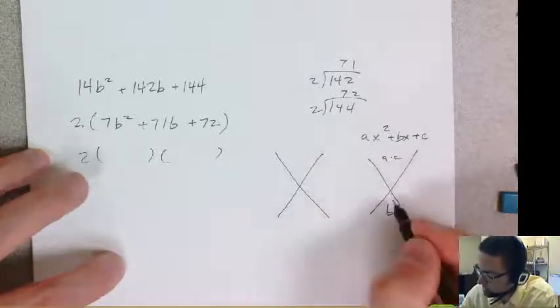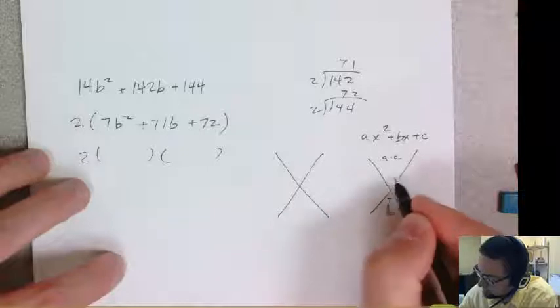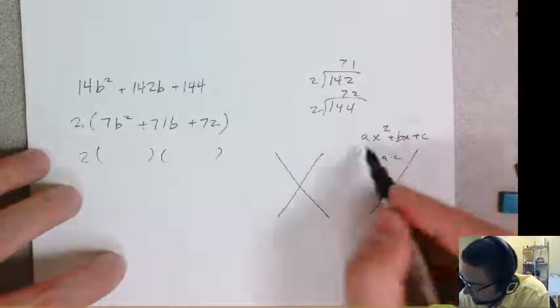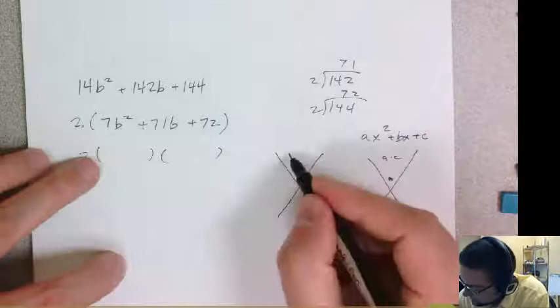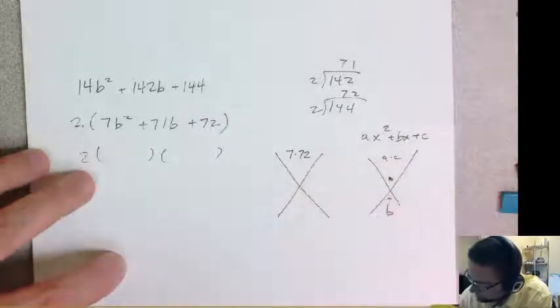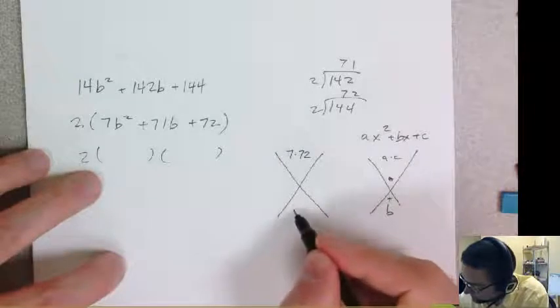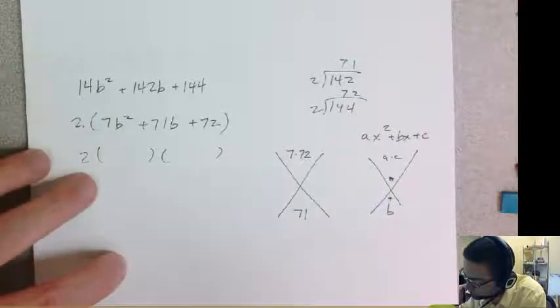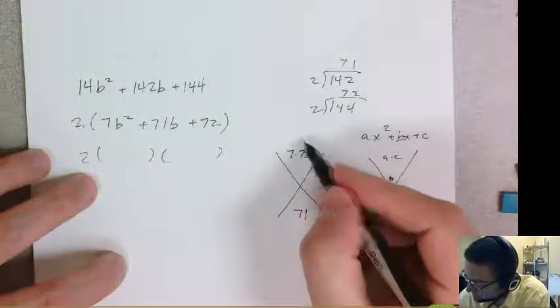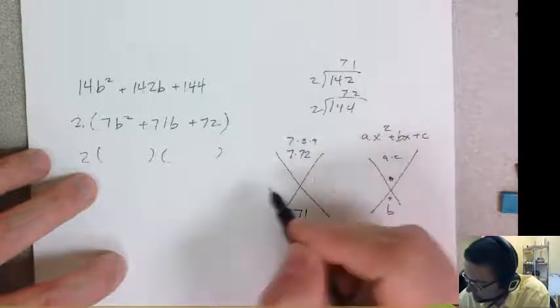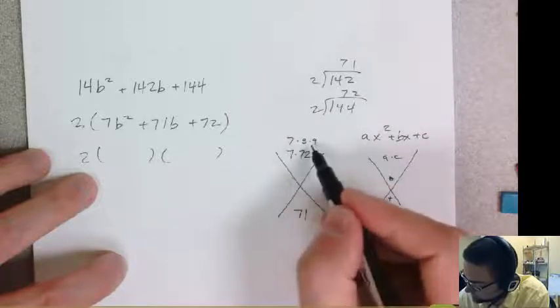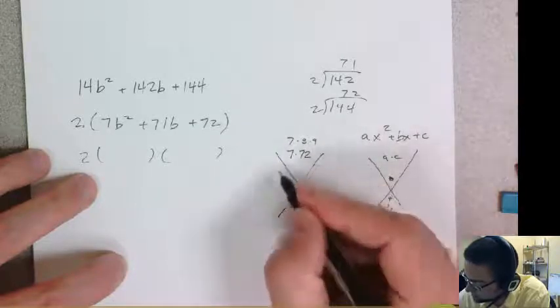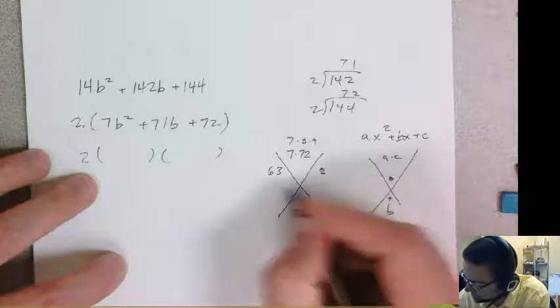You're going to put your first and last term on top. So A and C multiply together. And then you put B on the bottom. And then you're going to say to yourself, what do I add to get the middle term and multiply to get the top term? So first A times C, so 7 times 72. I'm just going to leave it as 7 times 72. And then in the bottom I have 71. So 7 times 72 is, that's 8 times 9. And it could be 56 plus 9. Or it could be 63 plus 8, 63 plus 8. That is 71.